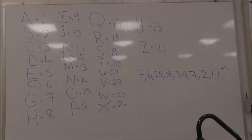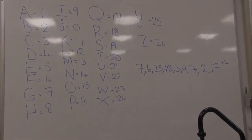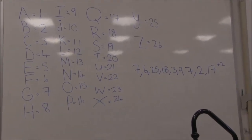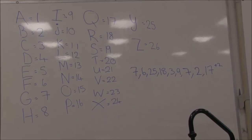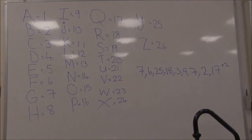Our code is substitution. Write out the alphabet. Each letter is a number. A is 1, B is 2, C is 3, and so on.